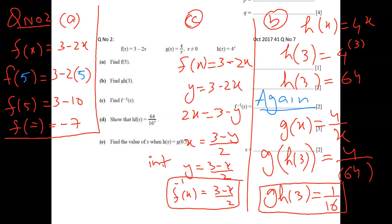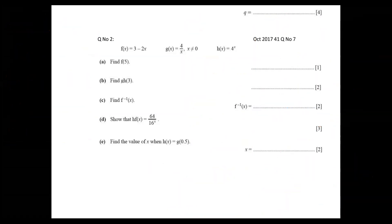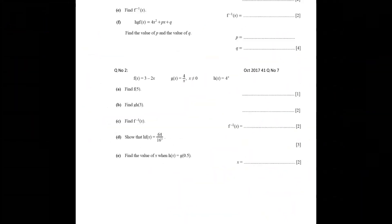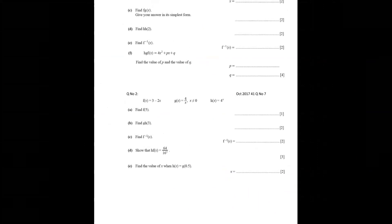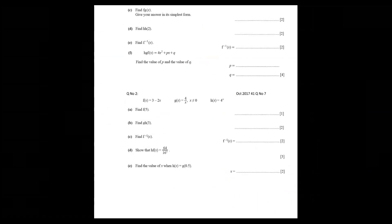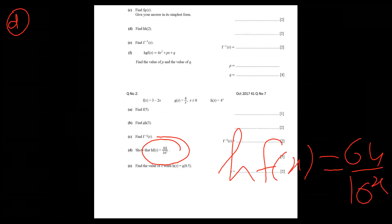Part number D and part number E. So I need a space. Part D, very interesting part D. What is plan? He said H F of X must equal this one, 64 over 16 to power X. Here a lot of indices properties. So put function of F in H. So function of F in H. So first of all, I'll copy function of H.